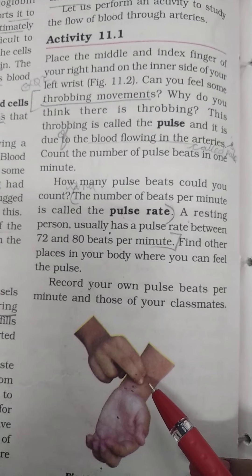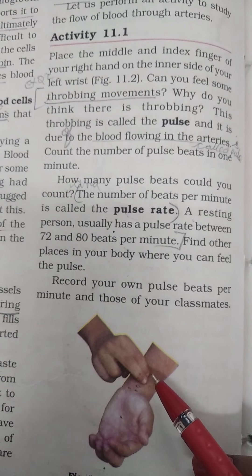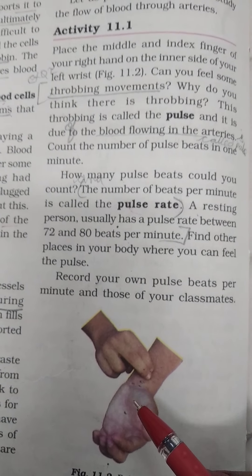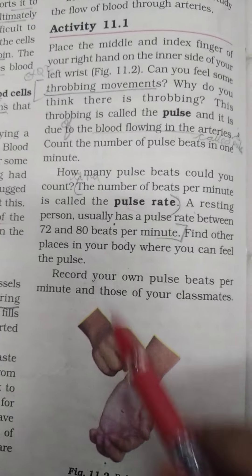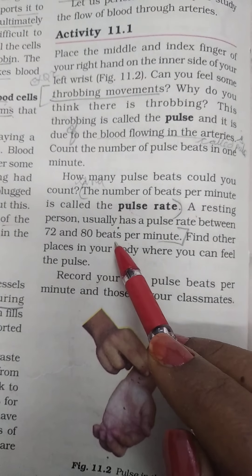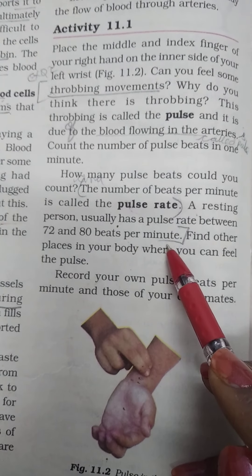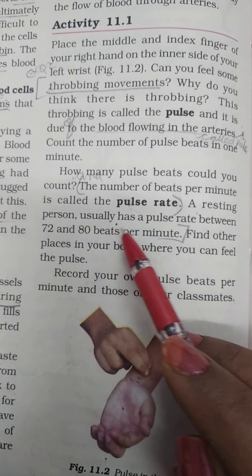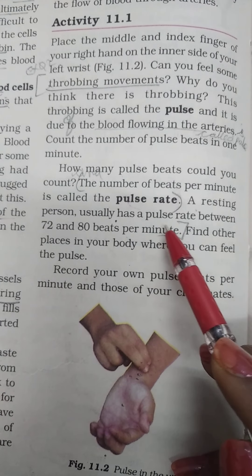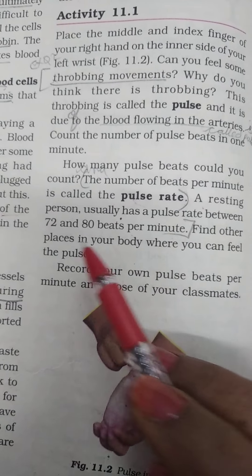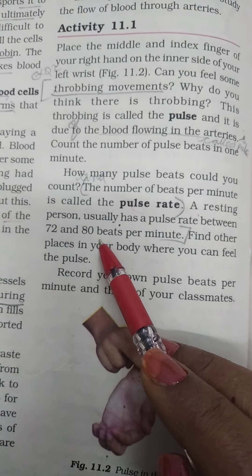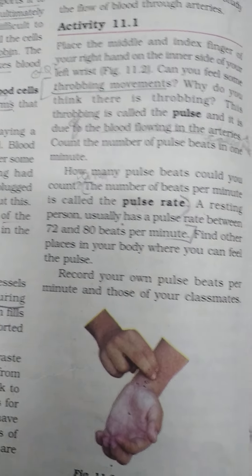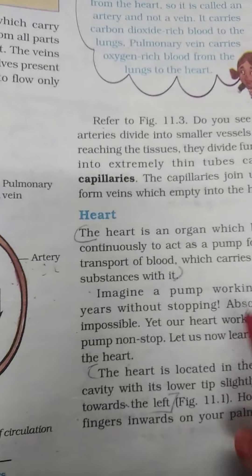A resting person usually has a pulse rate between 72 and 80 beats per minute. This is very important.